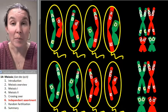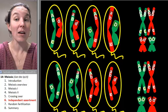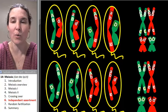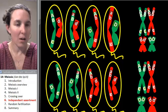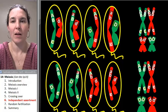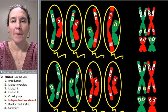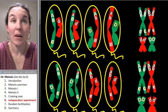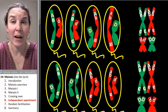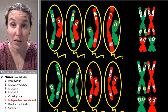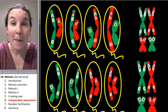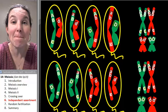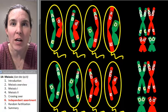Independent assortment means that my homologous pairs line up on the metaphase plate in a random order. You want to know something crazy? I'll tell you. We have, what, 23 pairs of homologues? 23 pairs of homologues can line up eight million different ways.